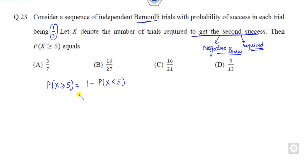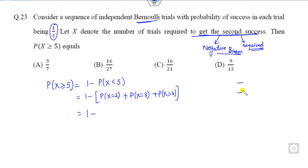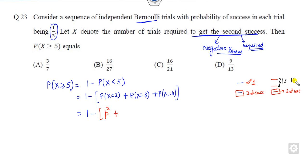Since the requirement is the 2nd success, you need a minimum of 2 experiments. For x = 2: both trials must be successes, so the probability is p². For x = 3: the third trial is the second success, meaning out of the first two trials there is one success and one failure. The probability is C(2,1)·p·q·p.